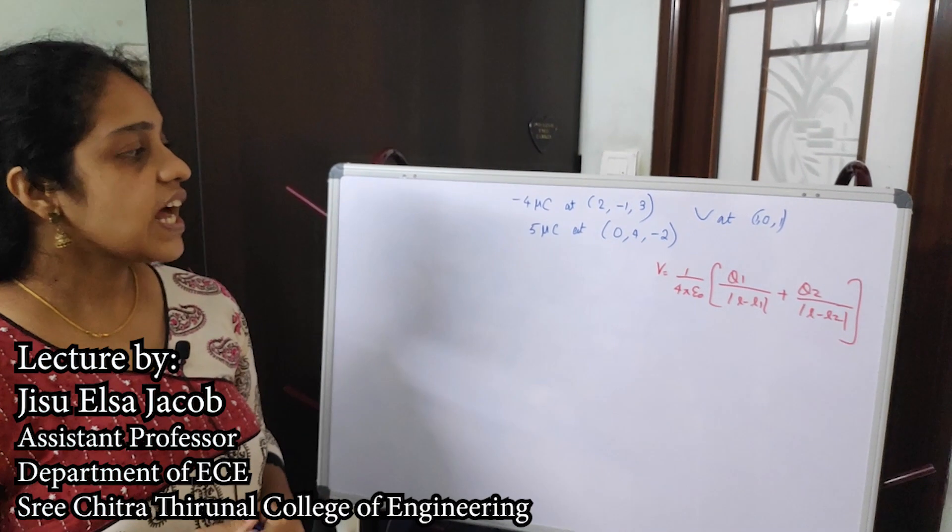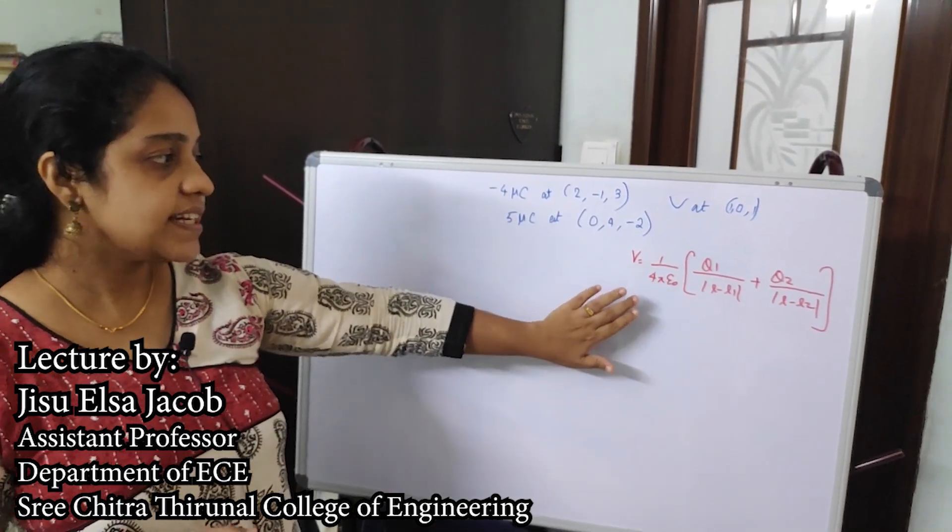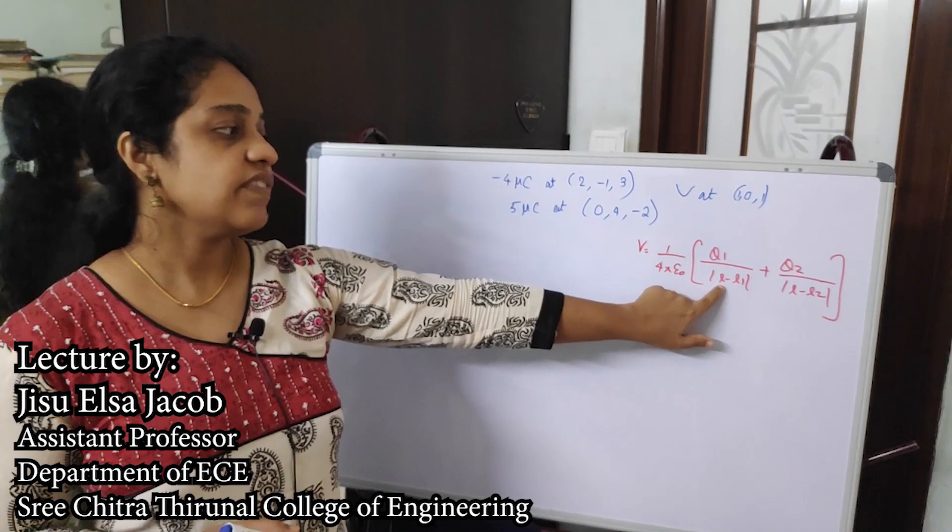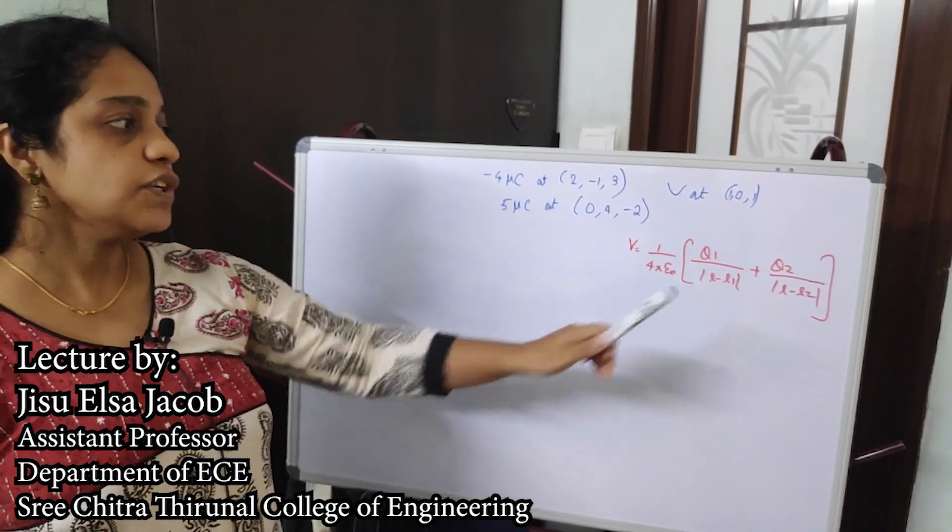So here in this problem, we are asked to calculate the electric potential at a point with position vector r. This is the general equation and this is an equation if we are considering two charges.